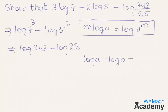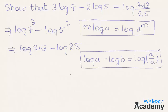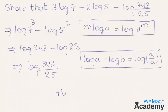This is in the form of log a minus log b, which is equal to log a by b. So by using the logarithm of quotient, we can write this as log 343 divided by 25. Therefore we get the result: 3 log 7 minus 2 log 5 is equal to log(343/25). Hence proved.